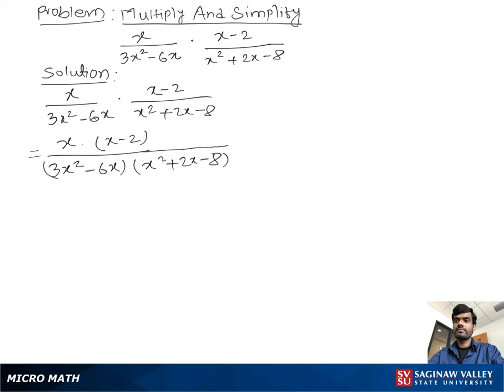So you can write x times x minus 2 over, now we take out the 3x as common factor, you can write 3x times x minus 2. Now do the factor of x² plus 2x minus 8, which is x minus 2 times x plus 4.